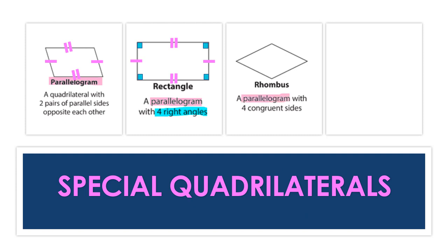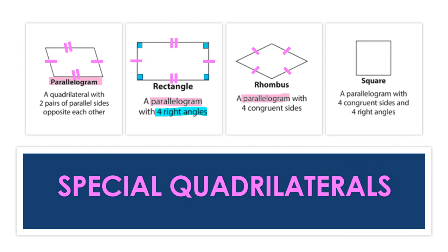A rhombus can also be named a parallelogram. However, its difference from a parallelogram is having four congruent sides, so it is named a rhombus. This group of parallelograms also includes squares. Like the rectangle, a square has two pairs of parallel sides opposite each other and four right angles. Like the rhombus, the square has four congruent sides, meaning that all four sides in both rhombuses and squares are equal in length. Because it is the only parallelogram to have all of these unique attributes, we call this quadrilateral a square.